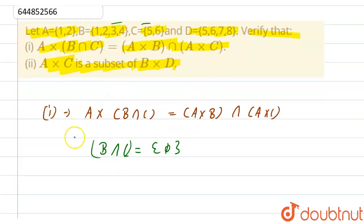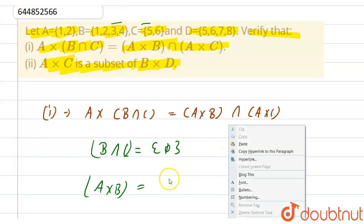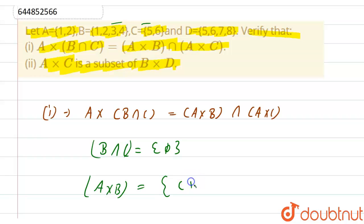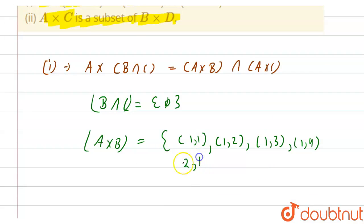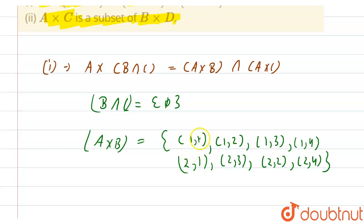Now let's find A×B. A = {1, 2} and B = {1, 2, 3, 4}. So A×B = {(1,1), (1,2), (1,3), (1,4), (2,1), (2,2), (2,3), (2,4)}.